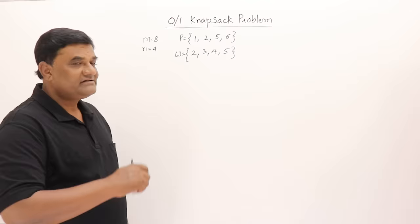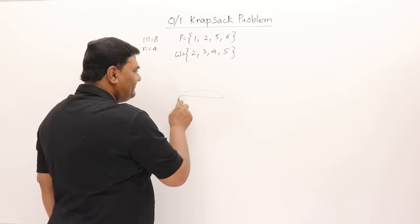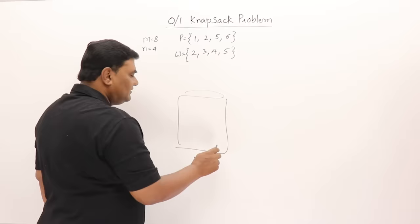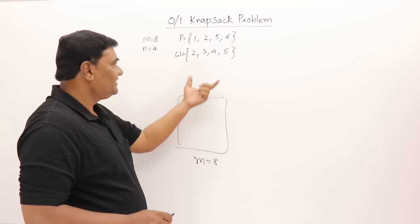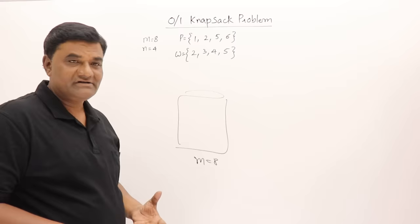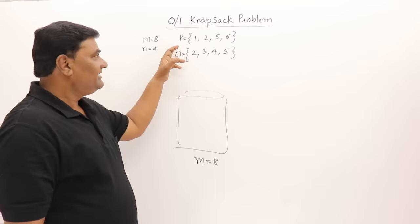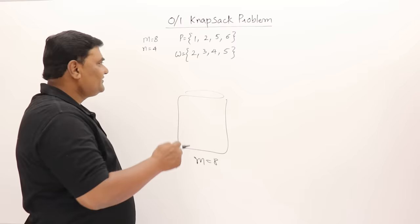Here I have four objects. For each object there is some profit and some weight, and there is a bag of capacity M that is 8. The objective is to fill this bag with these objects. The capacity is 8 but the total weight of all these objects is 14, so all objects cannot be filled in the bag. I have to carry a subset of those objects and sell them, maximizing total profit.